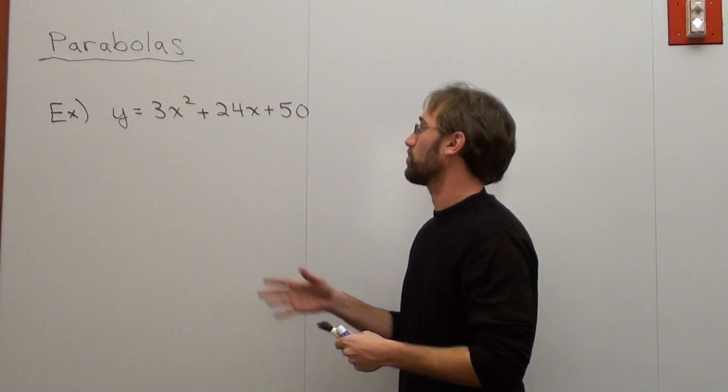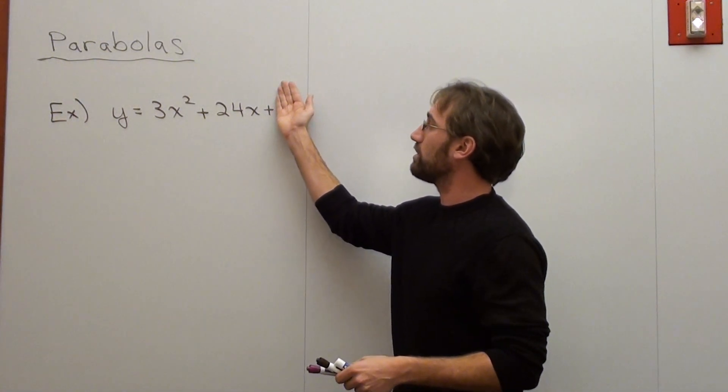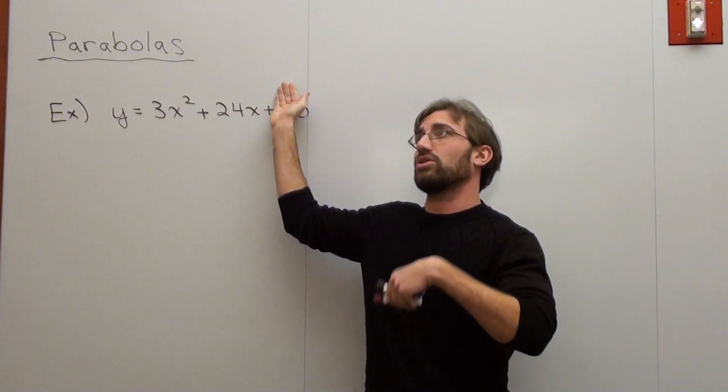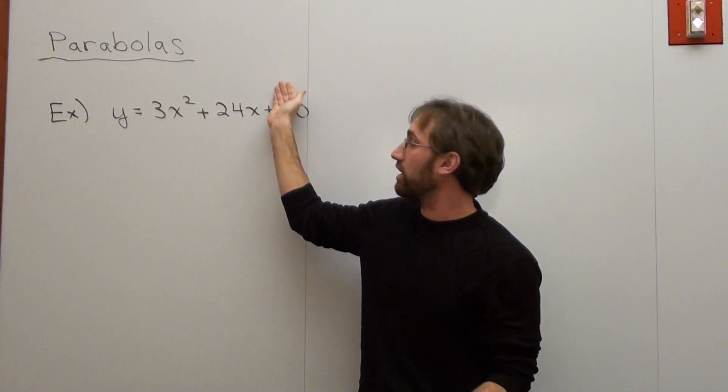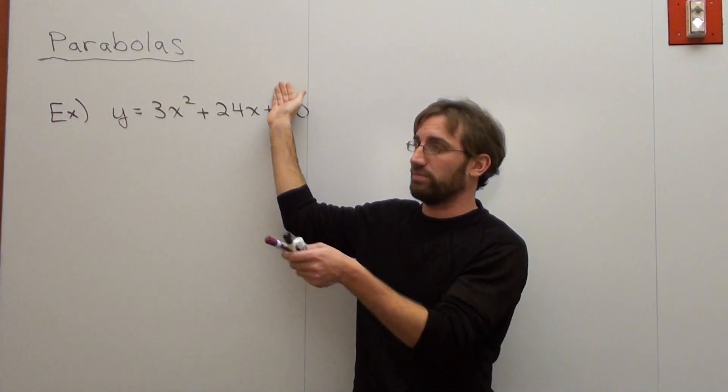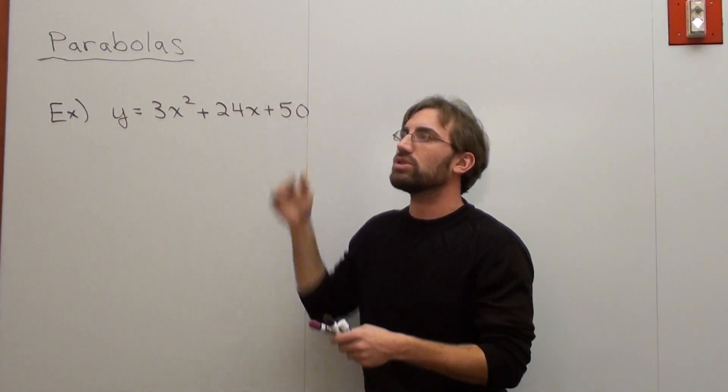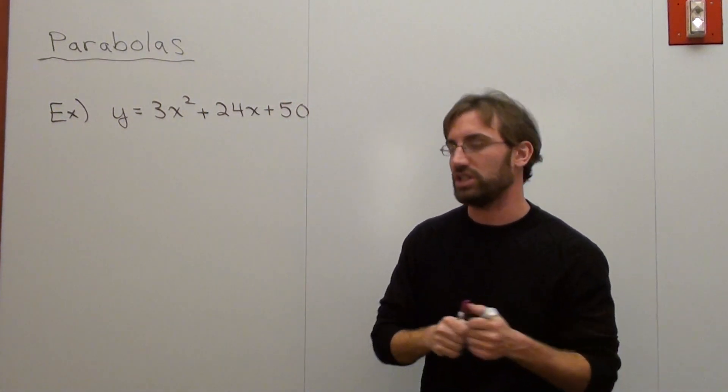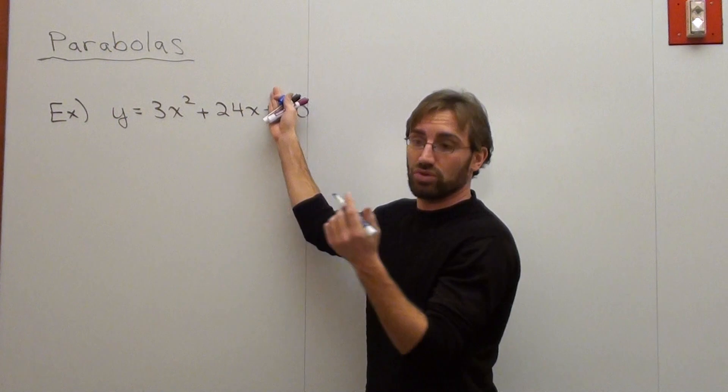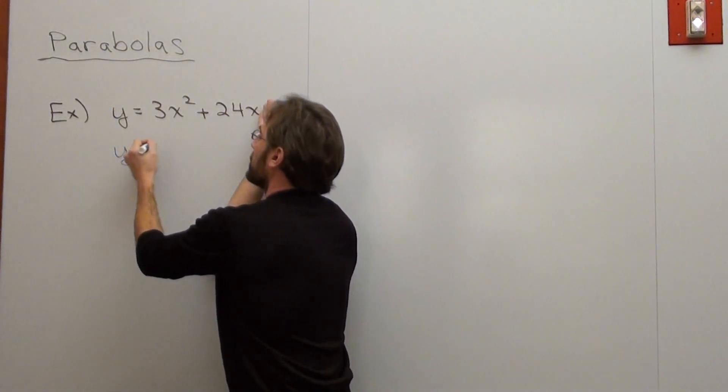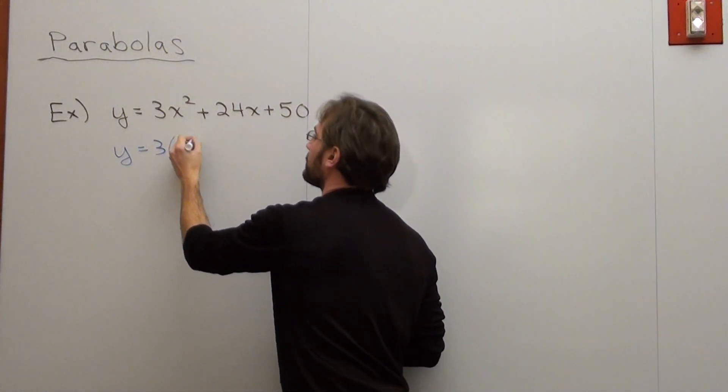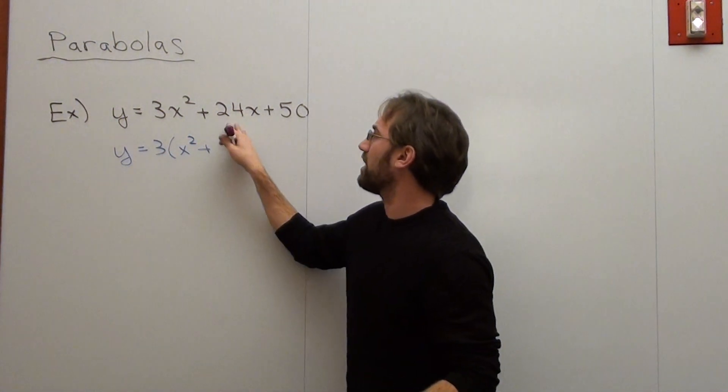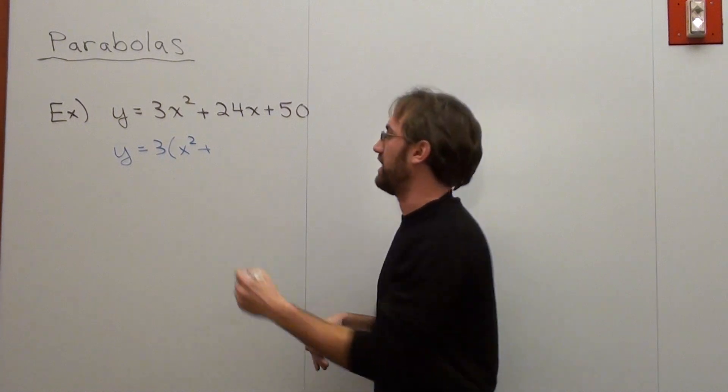So I got y equals 3x squared plus 24x plus 50. Now what I want to do is I want to make sure that there's just an x squared. I don't want a coefficient, a number in front of x squared. So what I'm going to do is I'm going to pull it out and take the GCF of it. And I'm just going to take the GCF of these two terms. So y equals, now if I pull it out, I pull out a 3 and I have x squared plus 8x.